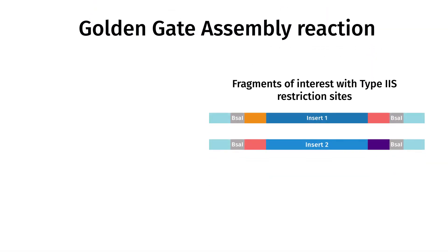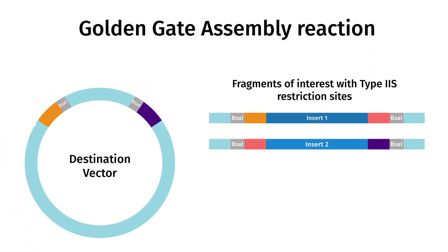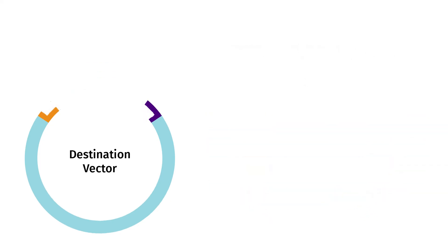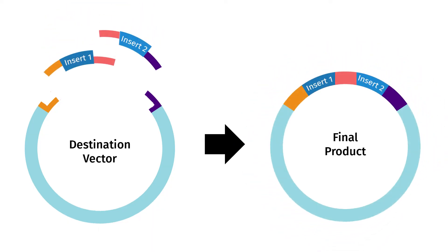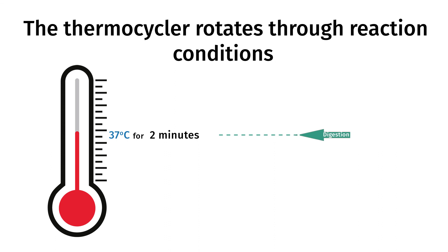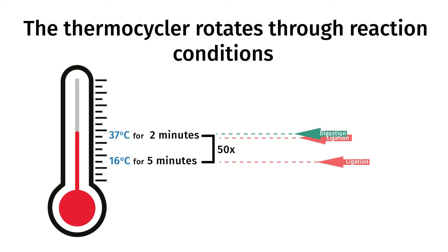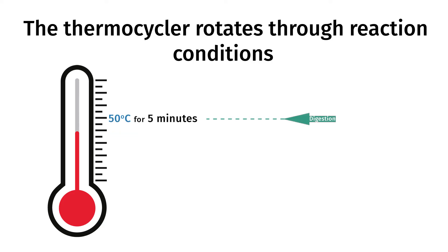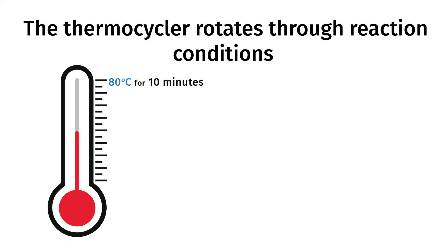Once the fragments and destination vector are ready, they are mixed into a single reaction with DNA ligase and a type 2S restriction enzyme. Golden Gate assembly is often described as a one-step, one-pot cloning process, but two distinct phases occur within the same reaction. As the thermocycler rotates through reaction conditions, it favors different steps of the assembly process, including digestion, annealing, and ligation. Alternating between different temperatures several times increases the opportunity for the complete final construct to be built.